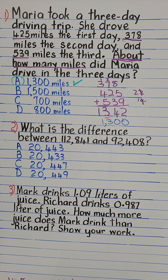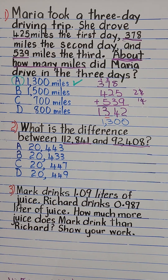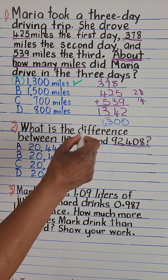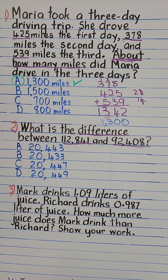Number two: What is the difference between 112,841 and 92,408? Let's look for our clue words. These numbers are the information we need to solve the problem. But what are they asking us to do? They're asking us to find the 'difference.' Difference tells us what operation to perform — we know that difference means to subtract. So we're going to subtract the smaller number from the larger number.